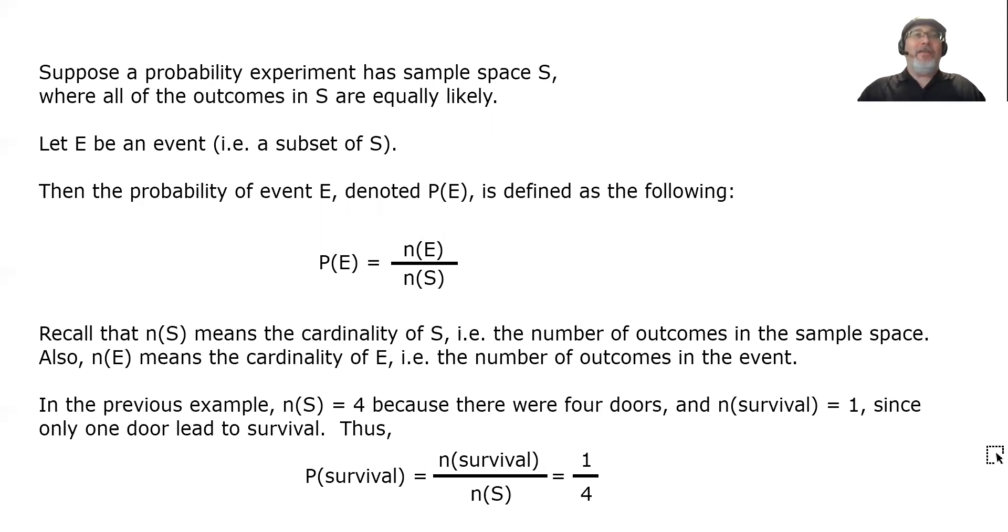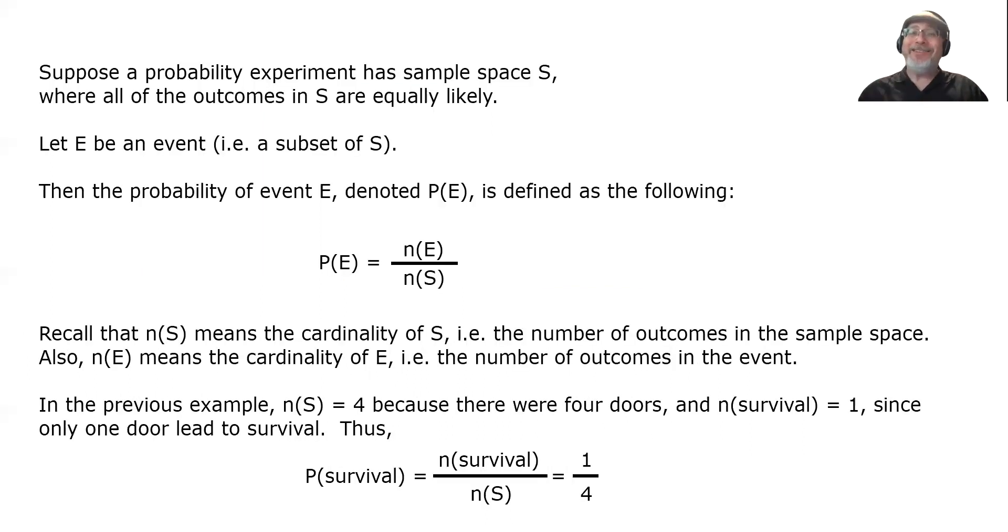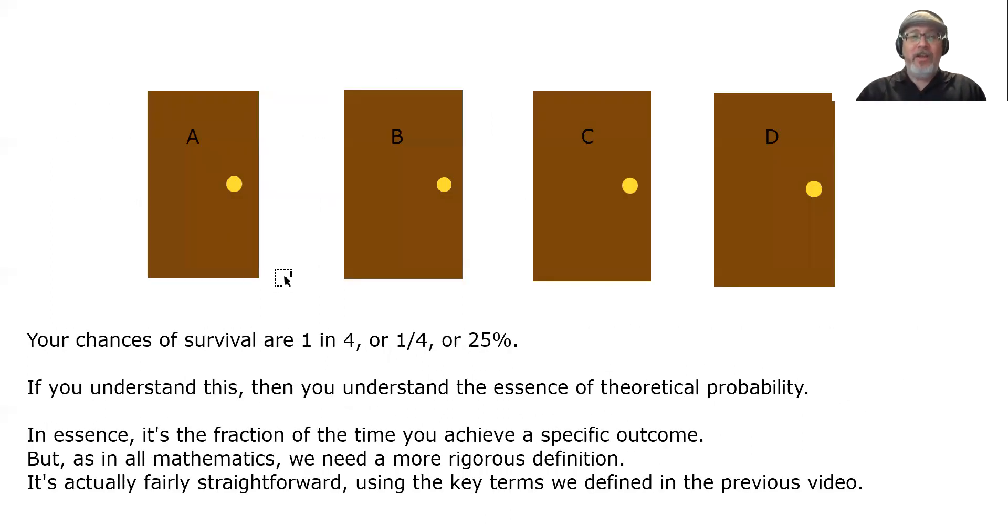Now, you might be thinking, I understood this until you said all this, and now I'm not so sure that I understood it. Trust me. If you understood it back here, then you understand it. All this is doing is putting it in the context of the vocabulary. The denominator of your fraction is the number of choices you have. The numerator is the number of choices you're looking for. In this case, I'm looking for 1 door that leads to survival.